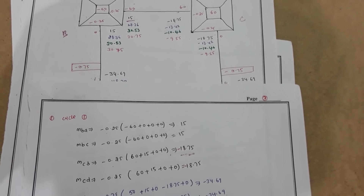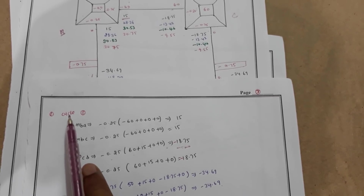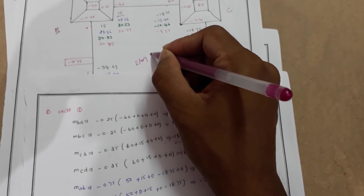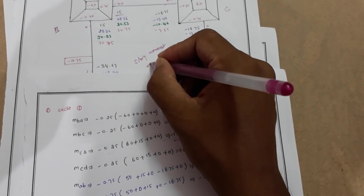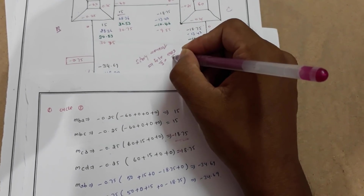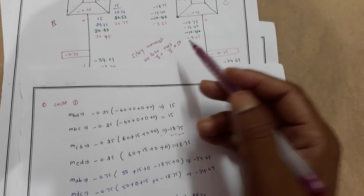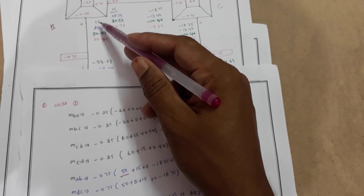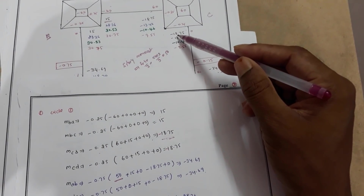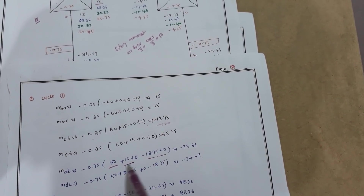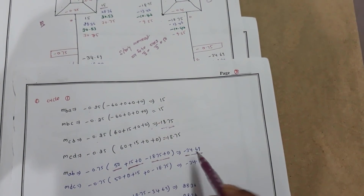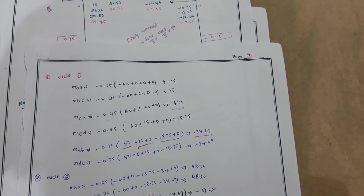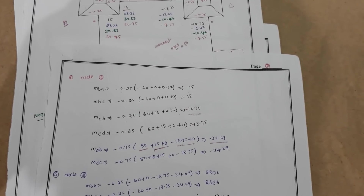Now we compute the displacement moment. The story moment is 50 kNm. Adding the top and bottom end moments: bottom moment contribution is 0.5 × 15, and top is minus 18.75, giving approximately minus 34 for members A-B and C-B. This completes the first cycle. Repeat the cycle until successive cycles produce the same result.